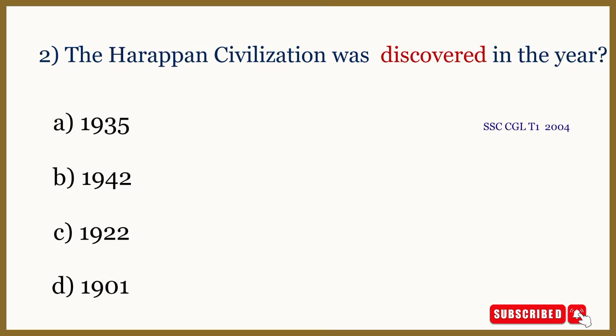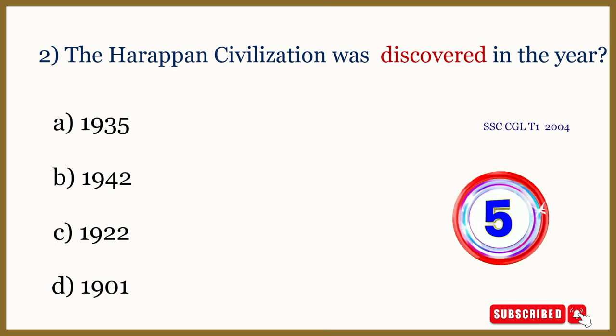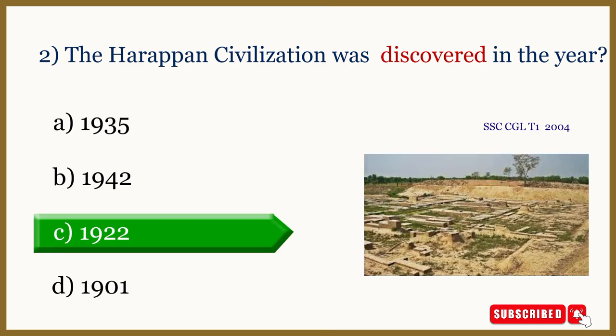Question number 2: The Harappan civilization was discovered in the year — the correct answer is 1922.